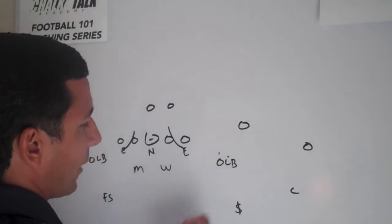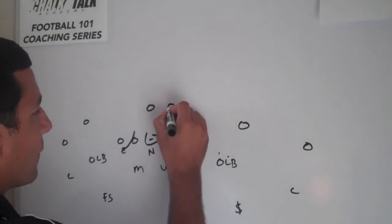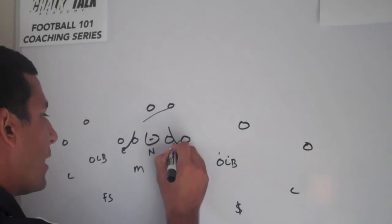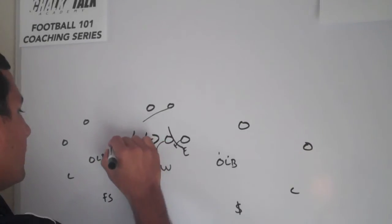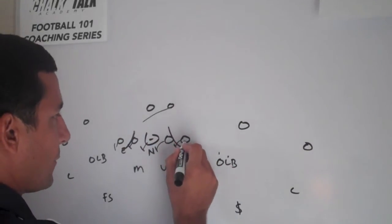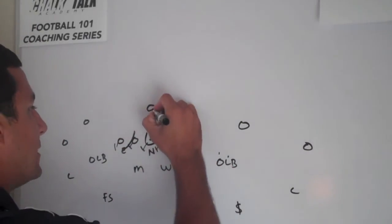As you look at it here, again, we talked about our outside linebacker. You get the runaway action. Everybody's blocking their zone tracks here. As he keys his triangle, he's keying through the tackle to the backfield here. He's going to see the mesh point.